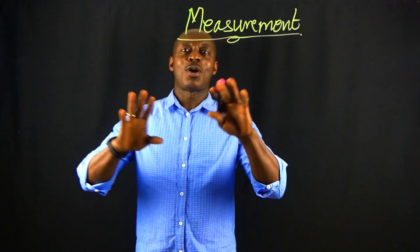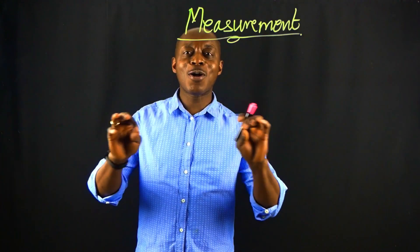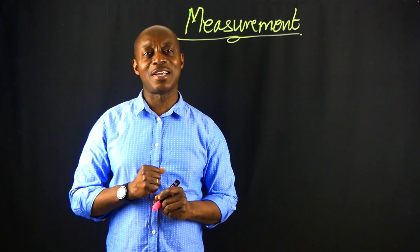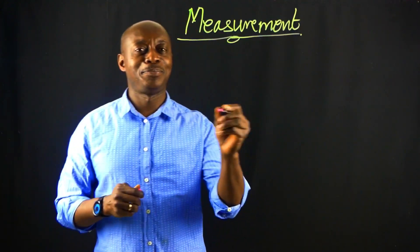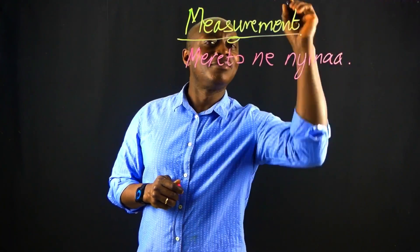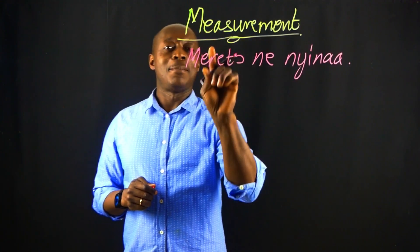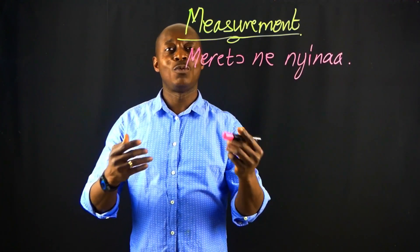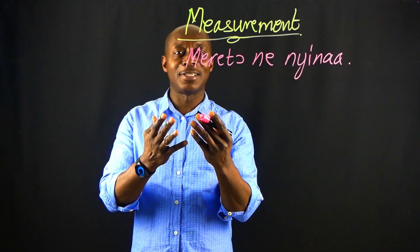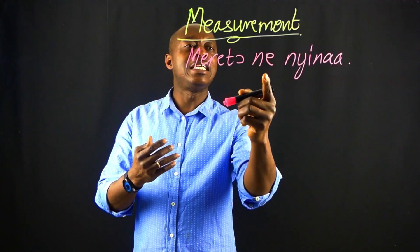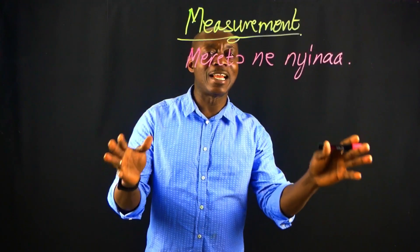First of all, let's begin with 'all of it.' If you go to the market and you want to buy some items and you say 'I want all of it,' how are you going to say that in Twi? You will say METONI NYINA. That is how we write it. So the phrase for buying all is METONI NYINA.